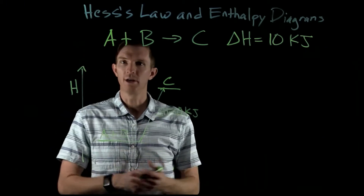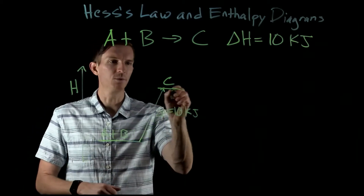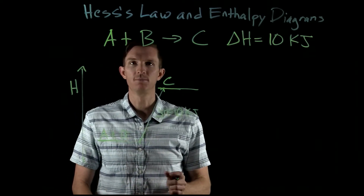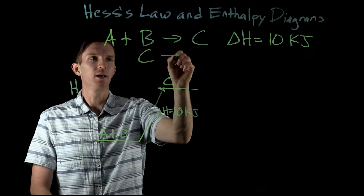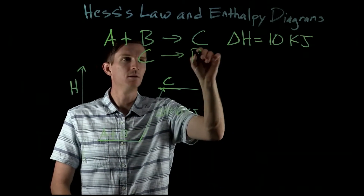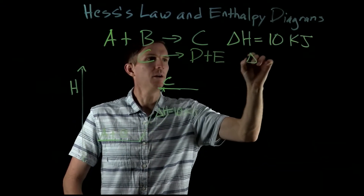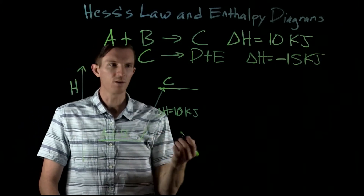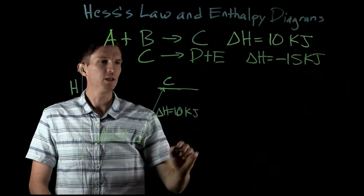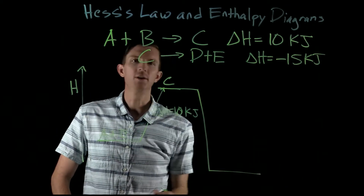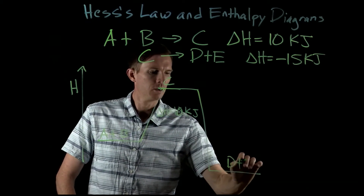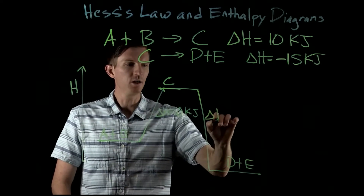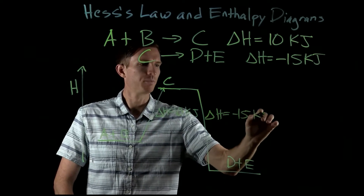This is what an enthalpy diagram is — visually showing what happens to our enthalpy. As we go from A and B combining to form C, we increase in enthalpy by 10 kilojoules. Now C can decompose into two new products, D and E, and here the enthalpy change is equal to negative 15 kilojoules. So as C goes to form D plus E, we go down 15 kilojoules.